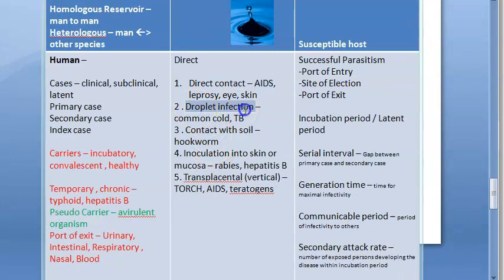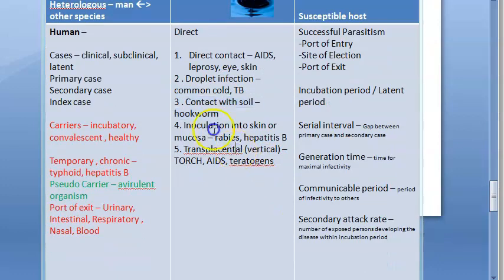Droplet infection includes corona, TB, common cold. Contact with soil gives you hookworm. Inoculation is when it's directly inoculated, like rabies or hepatitis B via blood - it's directly inoculated into the skin or mucosa.